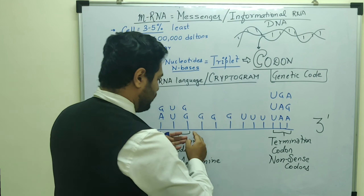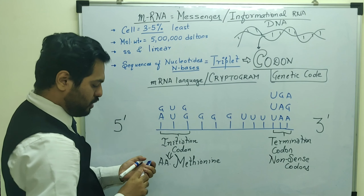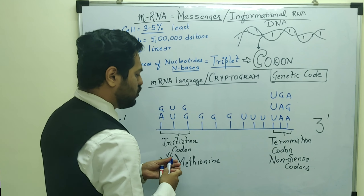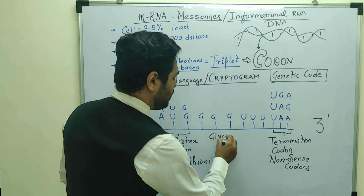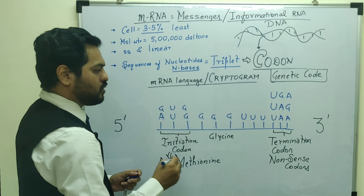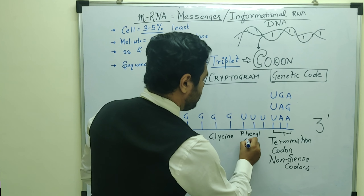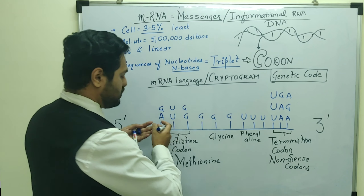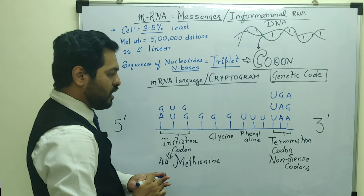The codons in between — like triple G (GGG), which codes for the amino acid glycine, and triple U (UUU), which codes for the amino acid phenylalanine — all specify particular amino acids. This sequence of amino acids leads to the synthesis of a polypeptide chain.